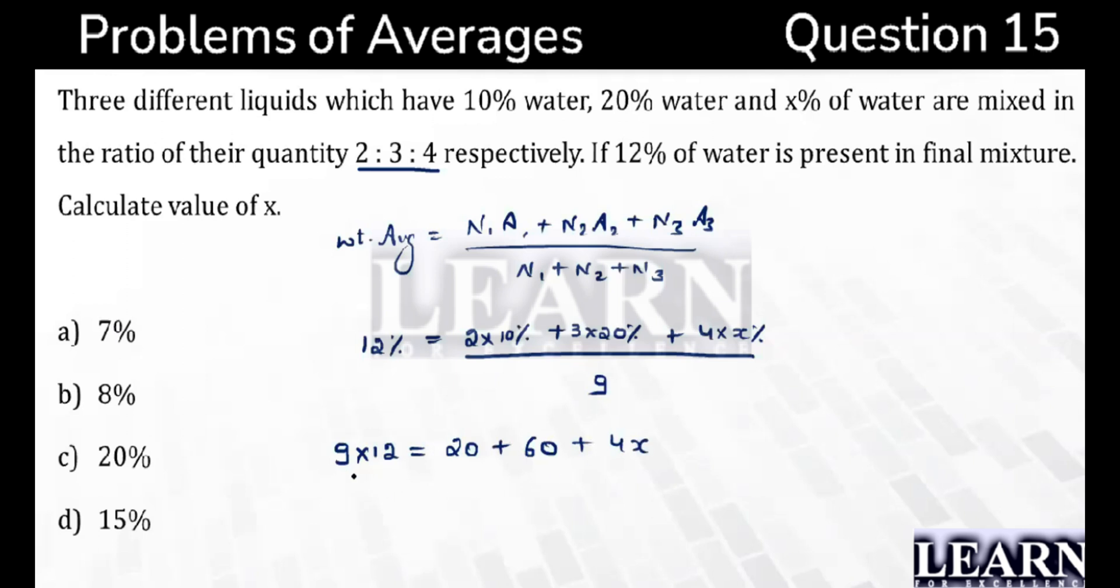9 into 12 is how much? 12, 9 times 108. 108 minus 80 equals 4X. Can I say 4X equals 28? So what is the value of X? X becomes 7.